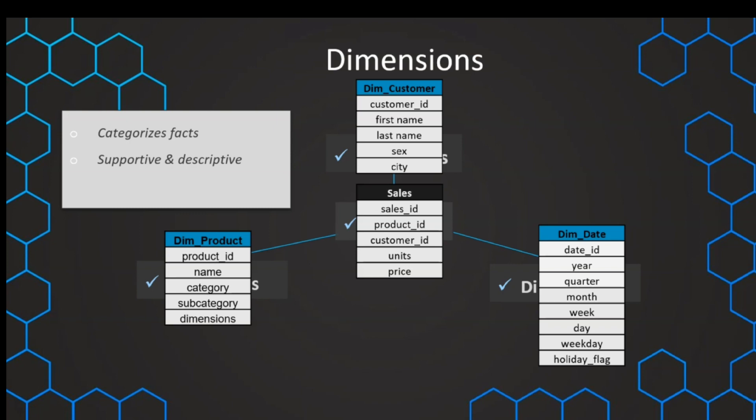This supports the facts and helps us analyze and basically filter, group, and label our data. That is what we also commonly refer to as slicing and dicing the data. These are the three purposes for our dimensions.